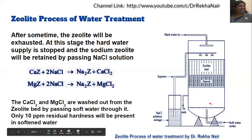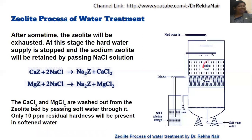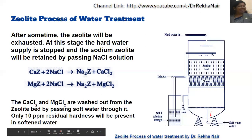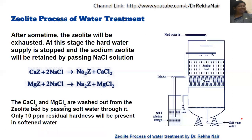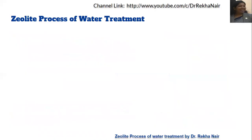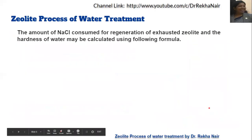After this process, only 10 ppm of residual hardness will be present. Once the sodium zeolite is regenerated, the hard water supply is resumed and we get softened water again, which contains only 10 ppm of residual hardness. This is better compared to the lime-soda process.